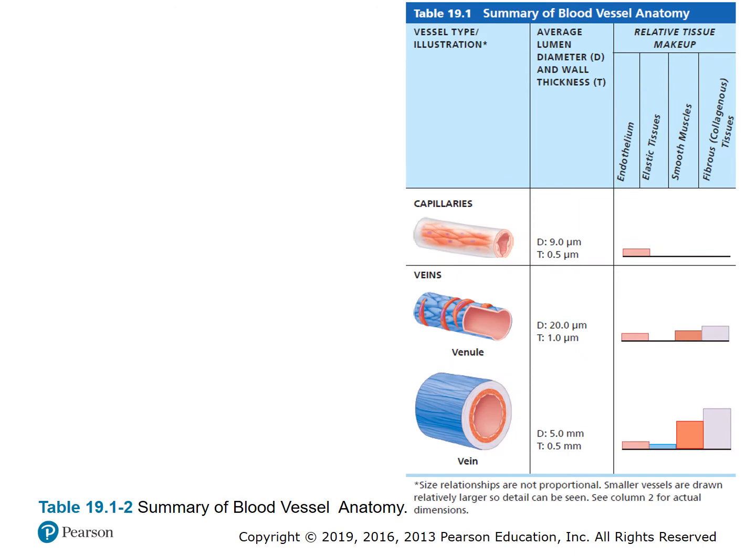Part two of the table shows capillaries, venules, and veins — again with average lumen diameter, wall thickness, and relative tissue makeup.